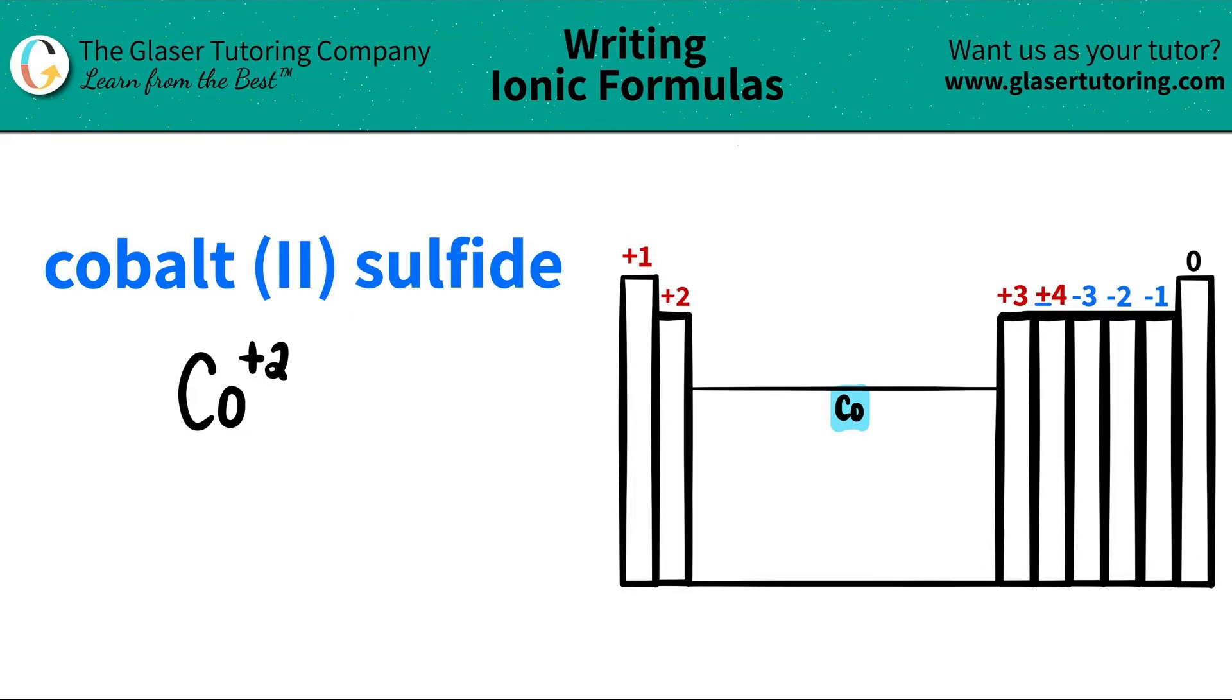Coming over to the next element, we have sulfide. It's an -ide ending, which means that the original element had to be sul-something. In this case, it's sulfur. And sulfur is over here on the periodic table. It's labeled as S. And it follows the oxidation trend that's in this group. Sulfur is going to be a -2 charge.